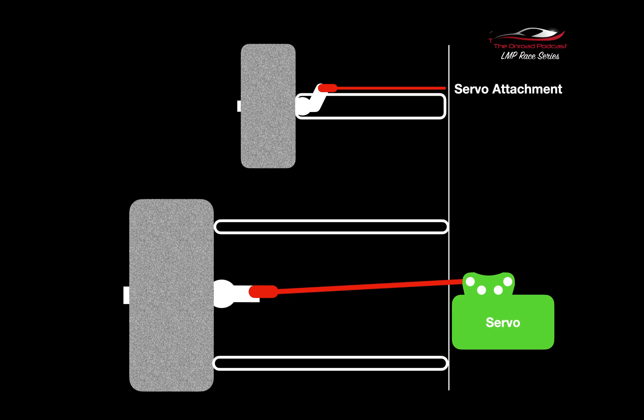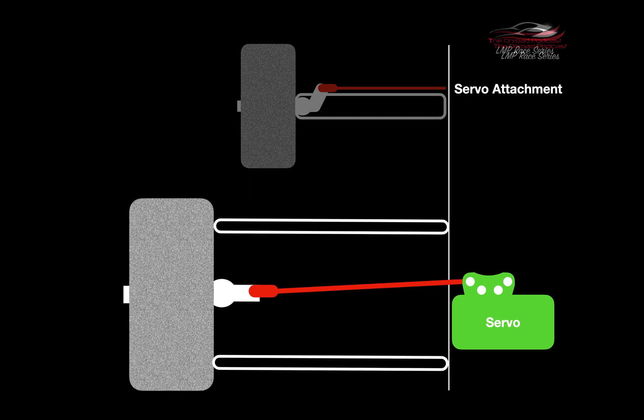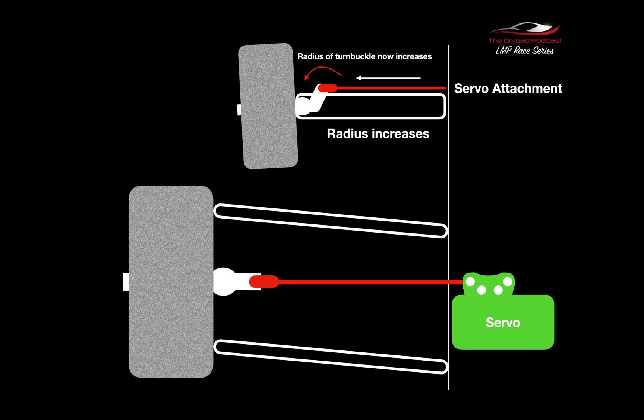Let's now look at what's going to happen when the steering travel goes through the suspension load. Now when the suspension pushes up, because the radius of the turnbuckle hasn't reached its maximum in the previous image, it's now actually going to push the wheel away from the center line.